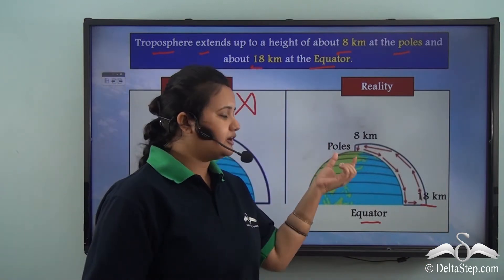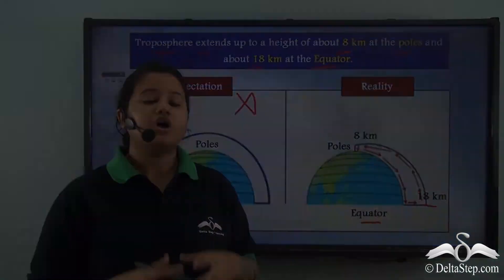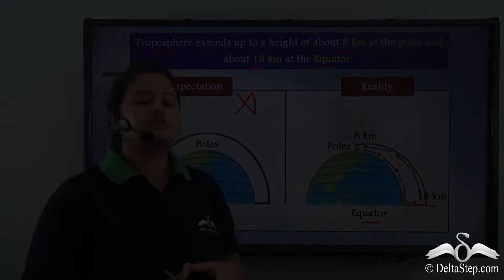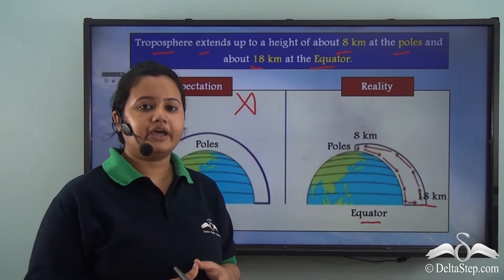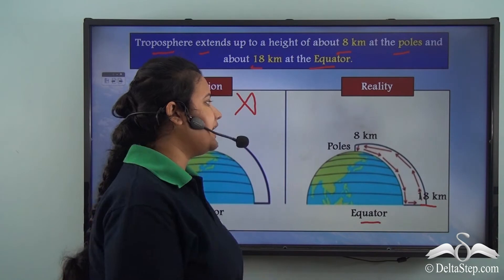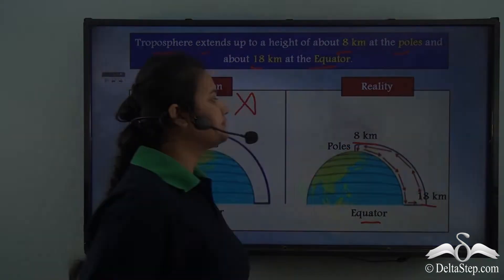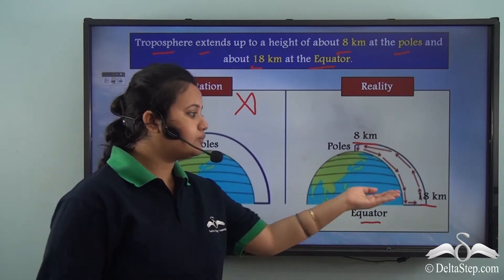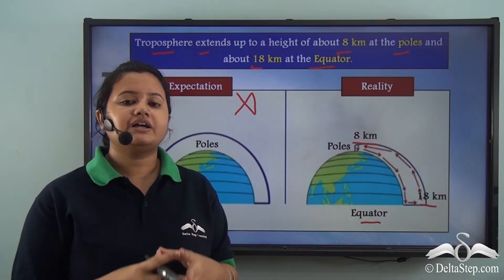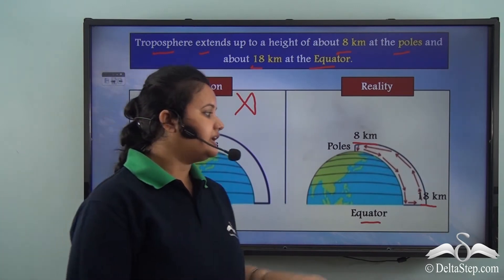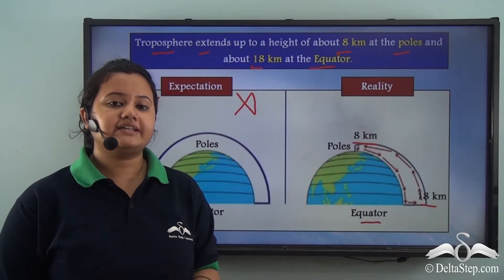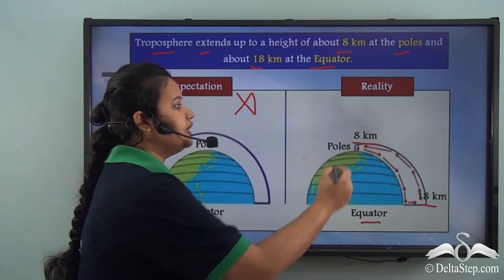At the poles, the temperature is quite low, so air becomes cold and dense and sinks. Due to this contraction of cold air, the tropospheric level at the poles is only 8 km. Since convectional forces are active in the equatorial region, the vertical extension of troposphere is greater there — 18 km at the equator versus 8 km at the poles.